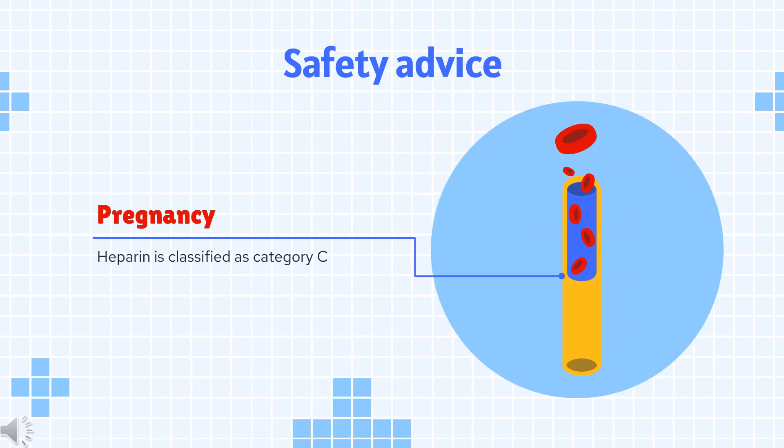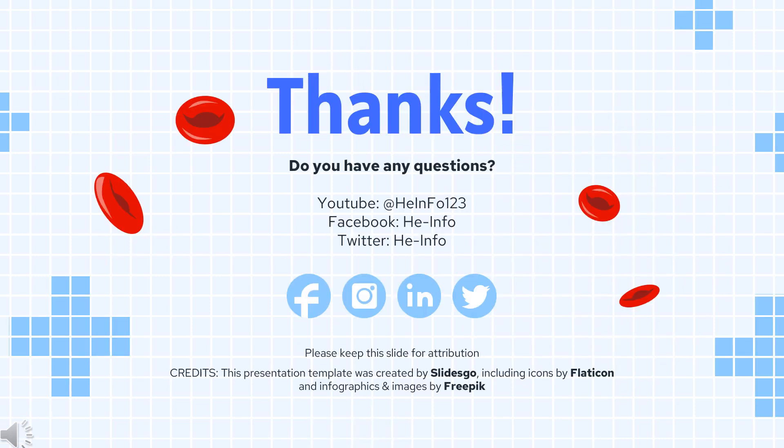Safety advice and warnings for the use of heparin sodium during pregnancy: FDA pregnancy category C — risk cannot be ruled out. That's all the information about heparin we have collected. Thanks for listening.